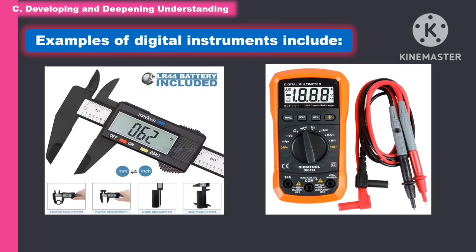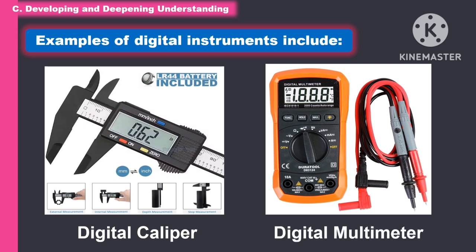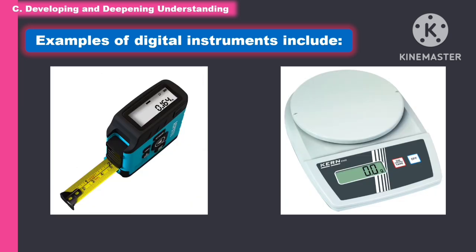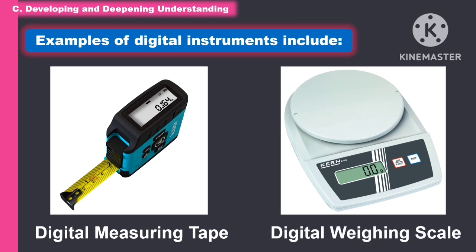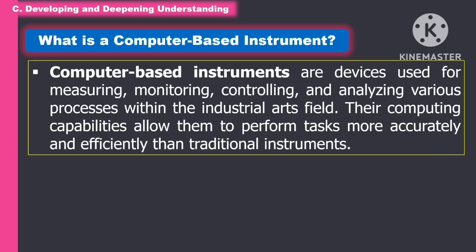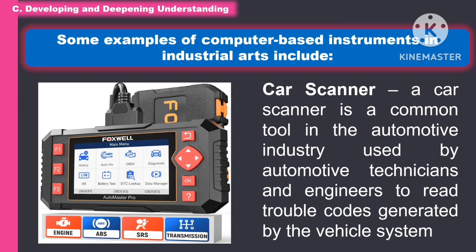The following are examples of digital instruments. What is a computer-based instrument? Computer-based instruments are devices used for measuring, monitoring, controlling, and analyzing various processes within the industrial arts field. Their computing capabilities allow them to perform tasks more accurately and efficiently than traditional instruments.